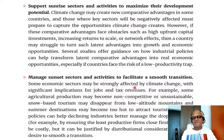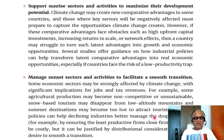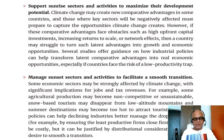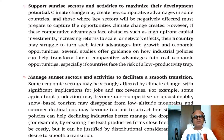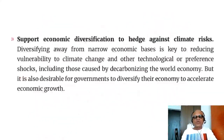Another option is to manage sunset sectors and activities to facilitate a smooth transition. Some economic sectors may be strongly affected by climate change with significant implications for jobs and tax revenues — for example, some agricultural production may become non-competitive, snow-based tourism may disappear from low-latitude mountains, and summer destinations may become too hot to attract tourists. Targeted policies can help declining industries manage the drop in activity, for example by ensuring the least productive firms close first. This may be costly but can be justified by distributional considerations or the desire to smooth a transition. For instance, Goa, India, is already very hot and barely seeing tourists — how it manages this change in tourism will be critical.